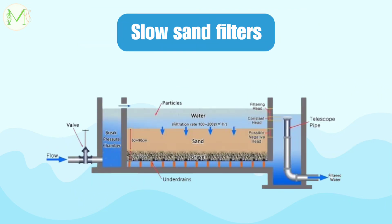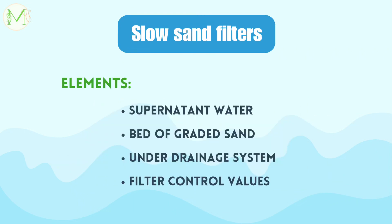Firstly, let's study about slow sand filters. Slow sand filters are also known as biological filters. They have various layers of sand, gravel and water held together in a container made of concrete or plastic. We can also find the growth of what is known as the heart of the filter, which reduces disease-causing organisms. The elements of slow sand filter are: the supernatant layer of water, bed of graded sand and gravel, under-drainage system, and filter control values.